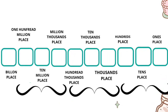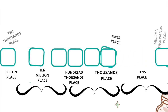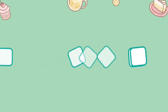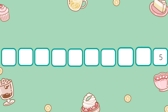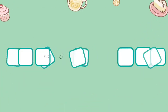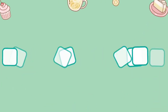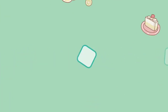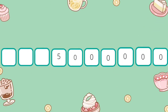Seeing all these number places together helps you understand what we mean by place value. In a multiple-digit number, the number place that a digit is in determines its value. Even though we only have 10 digits, each digit can stand for different amounts depending on the place value it occupies. The digit 5 in the ones place just means 5; in the tens place it means 50; in the hundreds place it means 500; in the hundred thousands place it means 500,000; and in the billions place it means 5 billion.